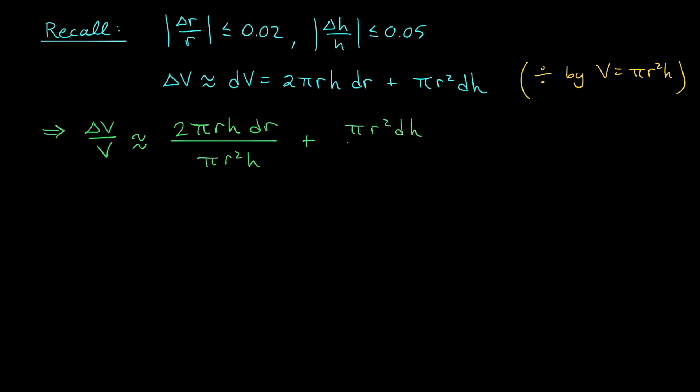Now check it out, we're going to have lots of cancellation here. Specifically, in my first term I can cancel both π's, one r and my h terms, leaving me with simply 2 dr over r. In my second term I can cancel the π's, both r's, and I'm simply left with dh over h.